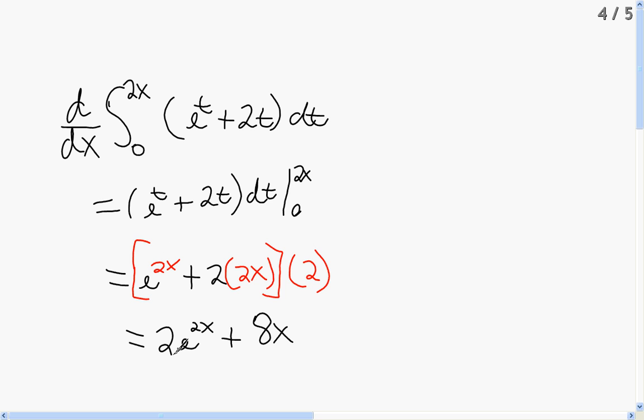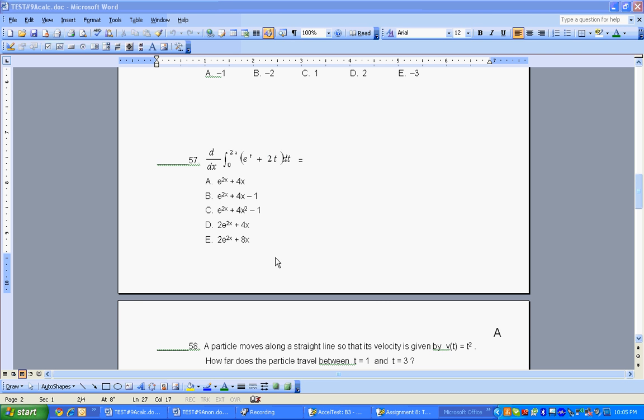This e to the 2x is going to give me 2e to the 2x. Now this 2 times this 2x is going to give me 4x, but with this 2 that's going to be distributed to each term on the inside. 4x plus 2x is going to give me 8x, so my final answer should be 2e to the 2x plus 8x. If I'm not mistaken, that was answer choice E.